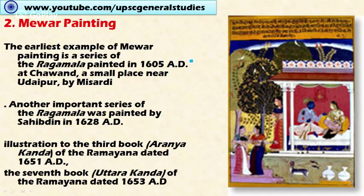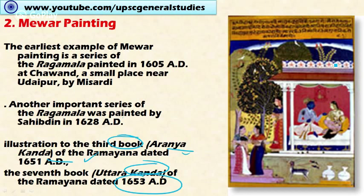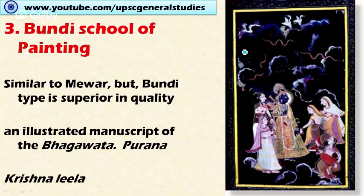The second important school is Mewar painting. The earliest example is a series of Ragamala painted in 1605. Another important series of Ragamala was painted by Shibdin in 1628. Works on the Ramayana are also made under the Mewar school — the third book, Aranyakanda, in 1651, and the seventh book, Uttarakanda, in 1653. Various other themes like Krishna Lila are also depicted. This is an example of Mewar painting.